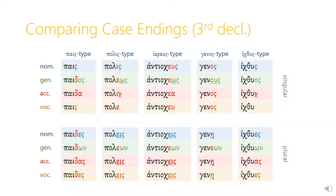Moving on to the pais type of third declension. The stem is paid, and so the accusative singular is paida, and the accusative plural is paidas. In the polis type, though, just like we had some irregularity in the genitive singular with poleos, we're going to have some irregularity in the accusative singular. The polis type uses nu instead of the regular alpha in the accusative singular. So instead of polea, the accusative singular of polis is polin. You'll see polis type nouns a lot, but this is one of the few real irregularities that you can't explain based on vowel combinations.